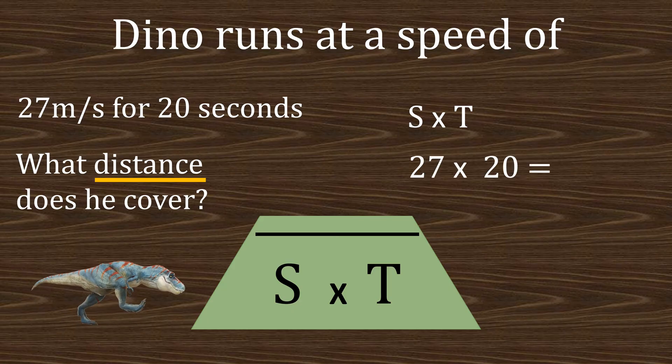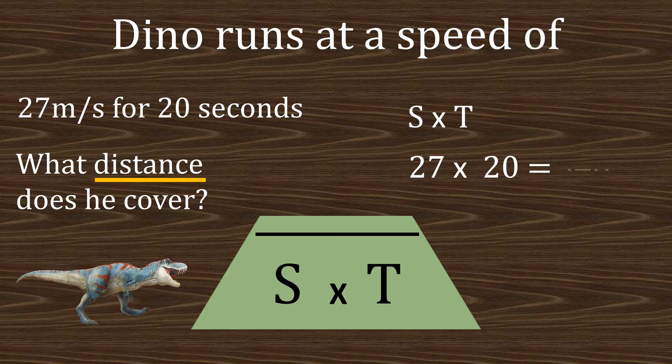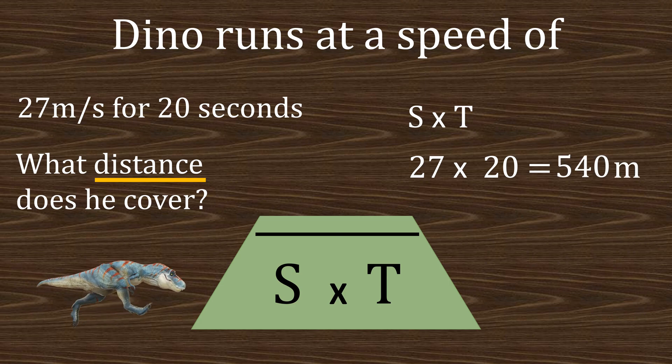speed is 27 and the time is 20, so simply 27 times 20 will give us 540 meters.